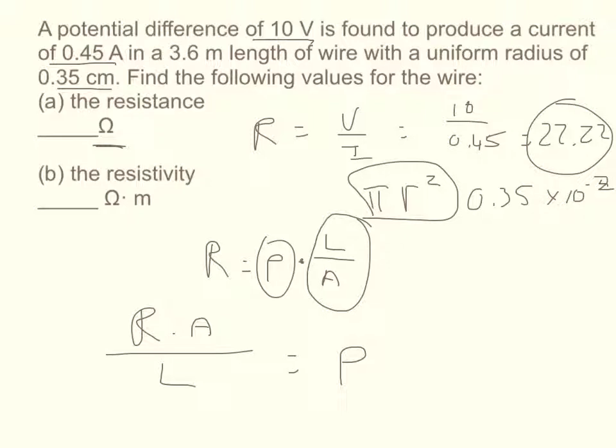The length it gives us is already in meters, so we'll just put 3.6 down for the length. When you get all that put in, you should get your answer as 0.000238 ohms times meters.